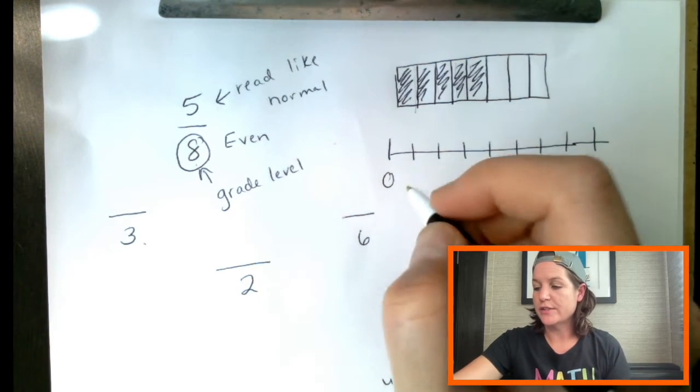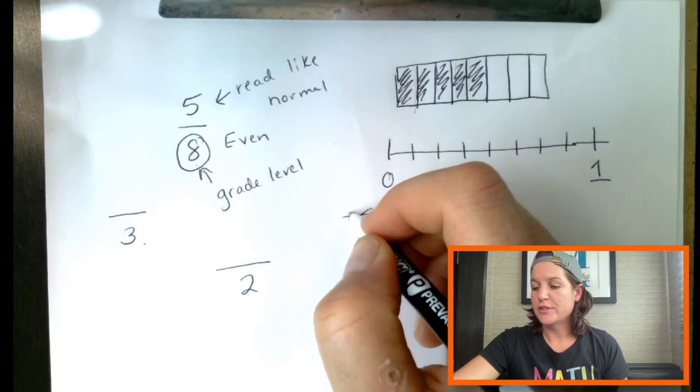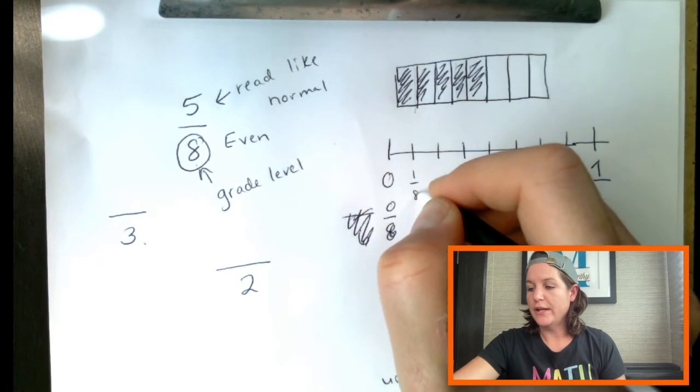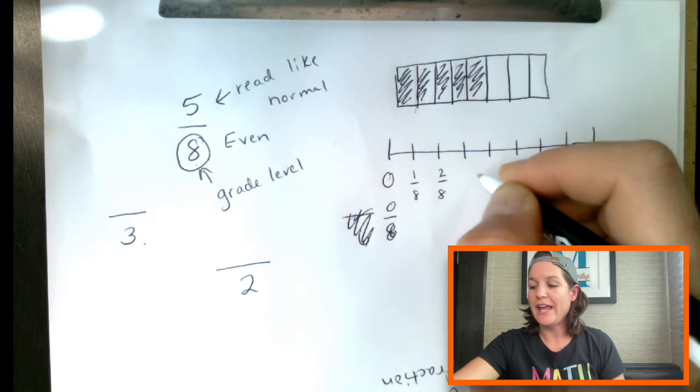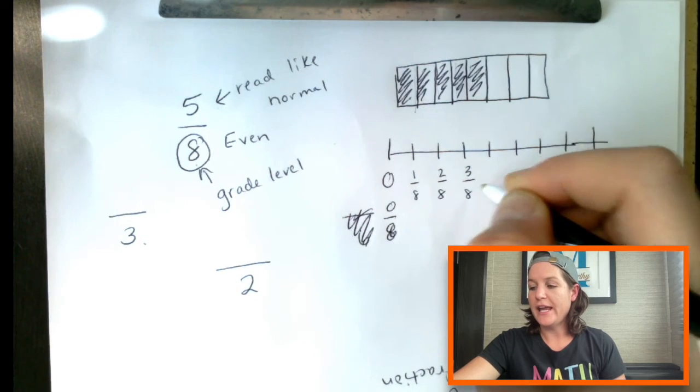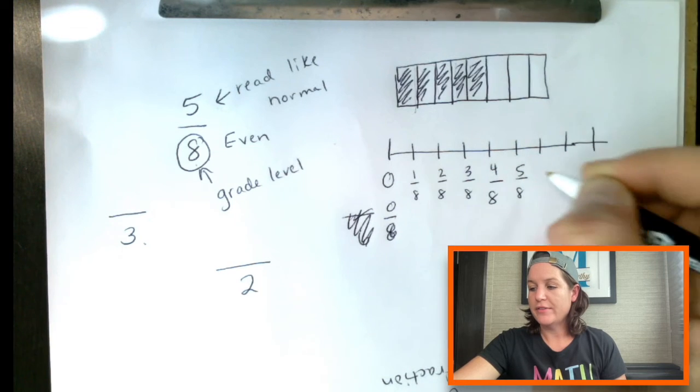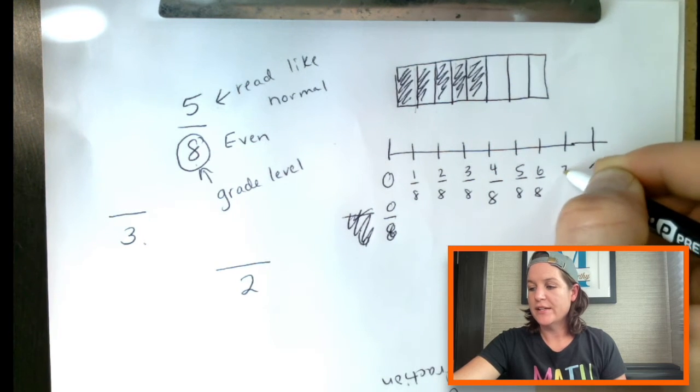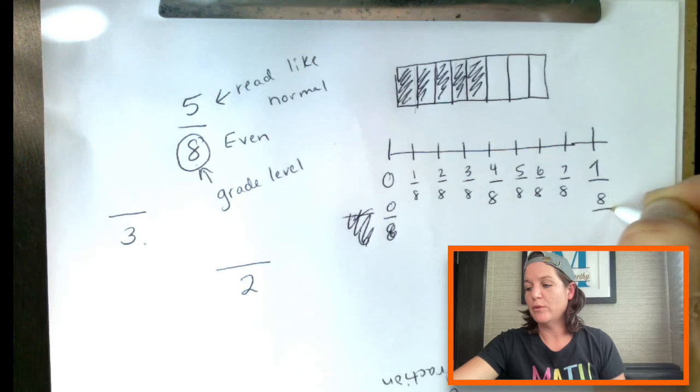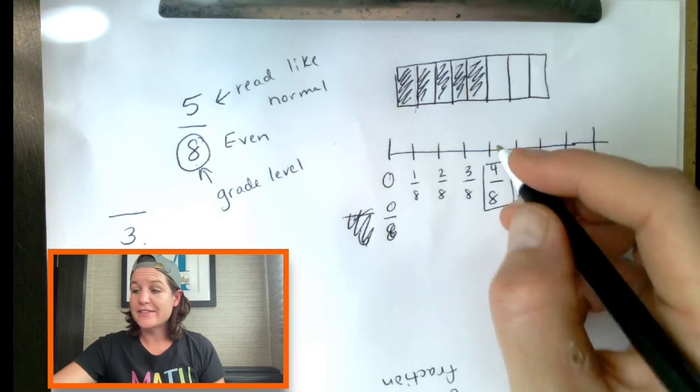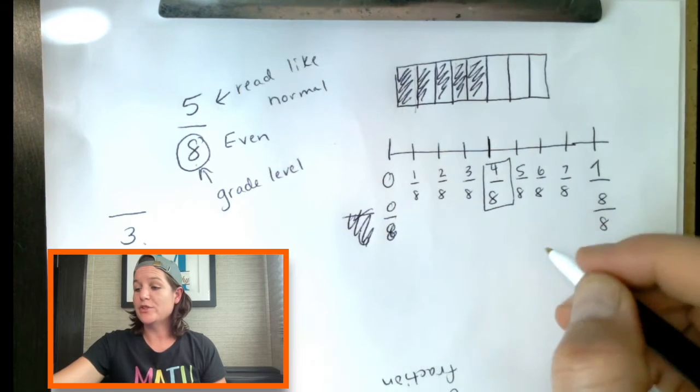And then we can label our fractions. So we've got zero eighths, one eighth, two eighths, three eighths, four eighths, five eighths, six eighths, seven eighths. And again, with one whole, eight eighths. You might want to have a conversation that four eighths is exactly halfway in between. So it is a fraction equivalent to one half, something like that.